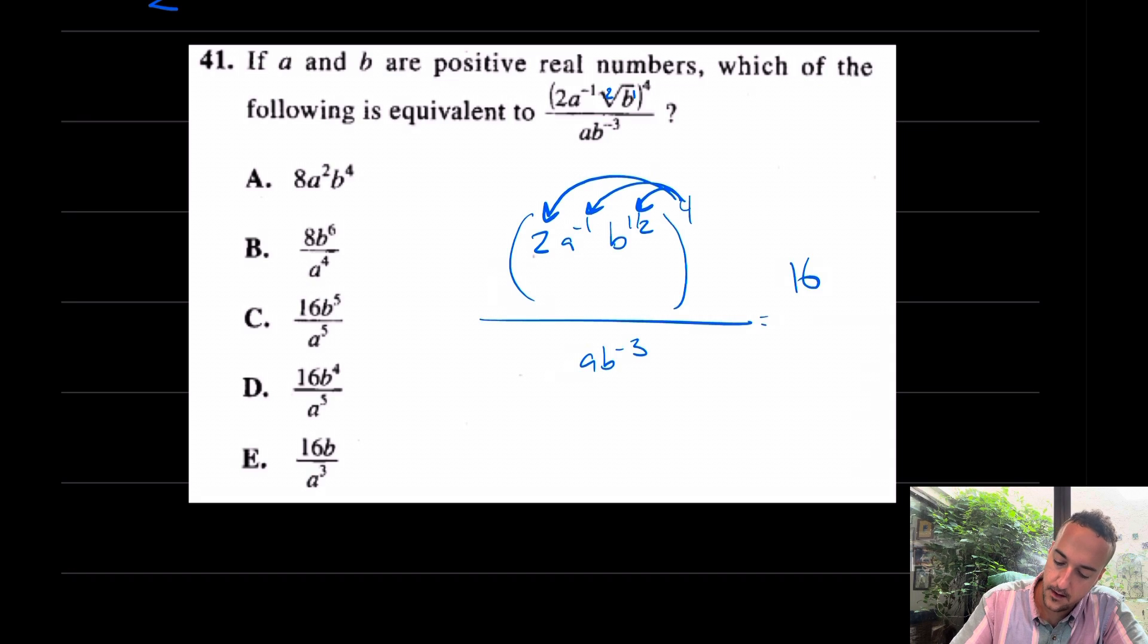This A to the negative 1, of course, going to the bottom. After it distributes, A to the negative 4th will go to the bottom. So how many A's will I have on the bottom? Well, because I have 1A already on the bottom, if I'm tacking on 4 more A's on the bottom, I'm going to have A to the 5th on the bottom. I'll say that one more time. Because I had 4 A's on top, A to the negative 4th on top, that's going to go to the bottom. And because I already have 1 on the bottom, I'll have A to the 5th on the bottom.